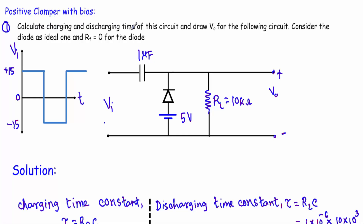Calculate the charging and discharging time of this circuit and draw the output voltage V_O for the following circuit. We have to consider the diode as an ideal diode, and when the diode is in forward bias it has a resistance RF, and here we will consider RF equal to zero.